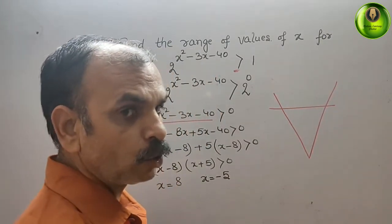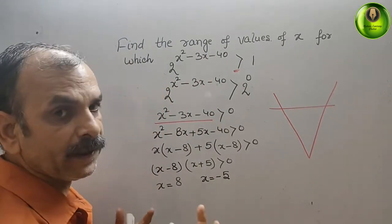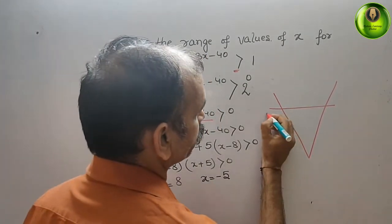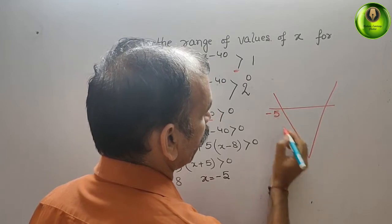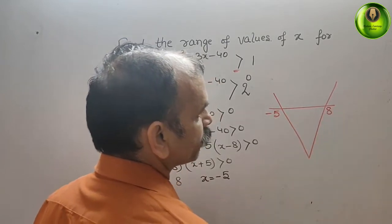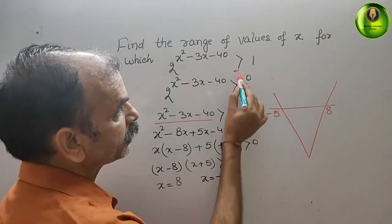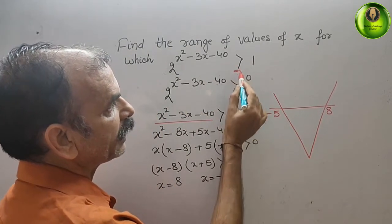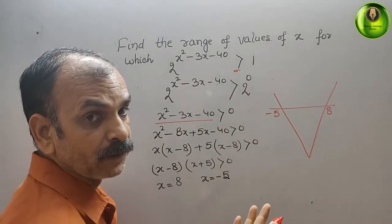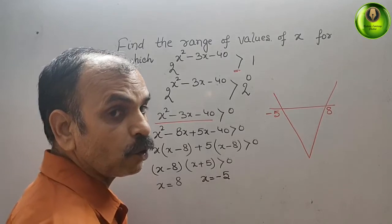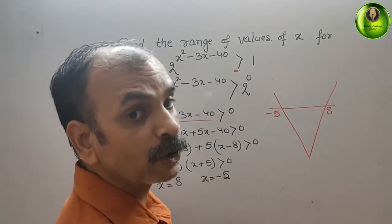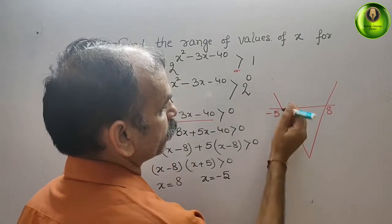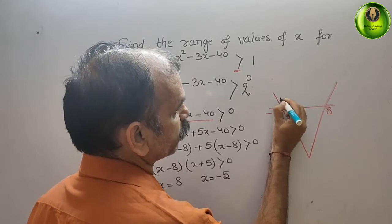Now, your two solutions are what? Minus 5 and 8. Here you will write minus 5 and here you will write 8. Now, what they have given? See the inequality sign, that is greater than. Therefore, we have to move towards the positive one. So here it is your positive.